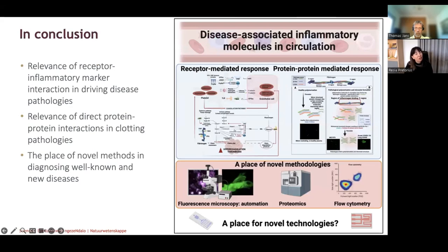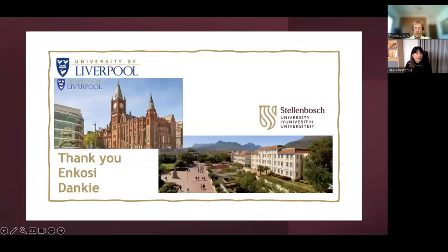In conclusion, we have shown — and many others have shown — the relevance of receptor-inflammatory marker interactions in driving pathology. The fibrinogen molecule can have direct protein-protein interactions with spike protein and other inflammatory molecules, and we believe there is a place for novel diagnostic methods for long COVID and other diseases, with imaging flow cytometry potentially being central. That's a nutshell overview of what we have been doing — I hope it gave a nice overview for your listeners.